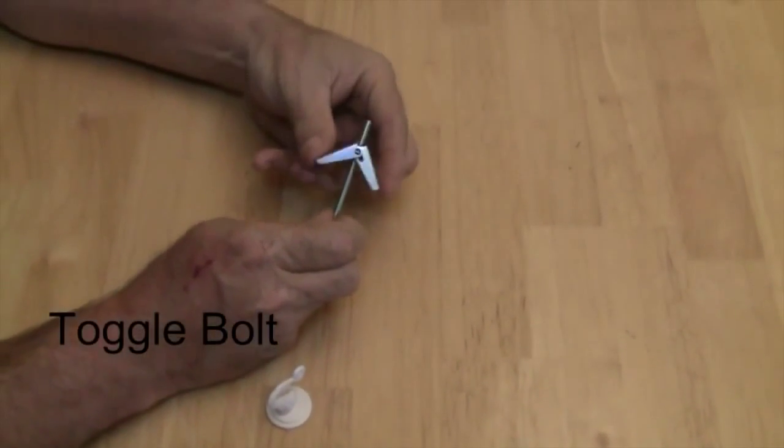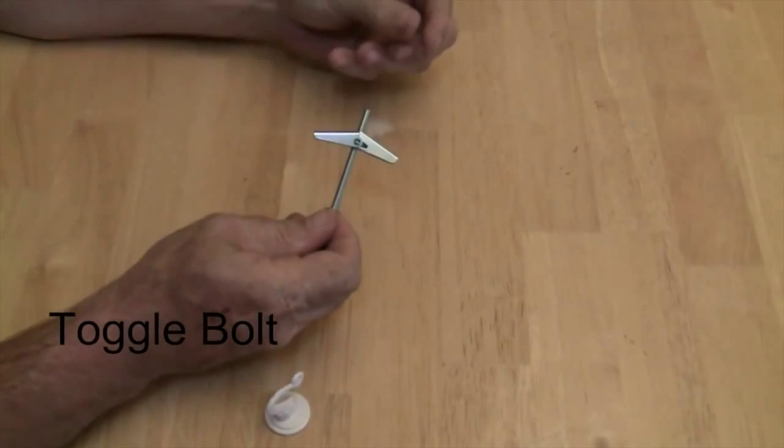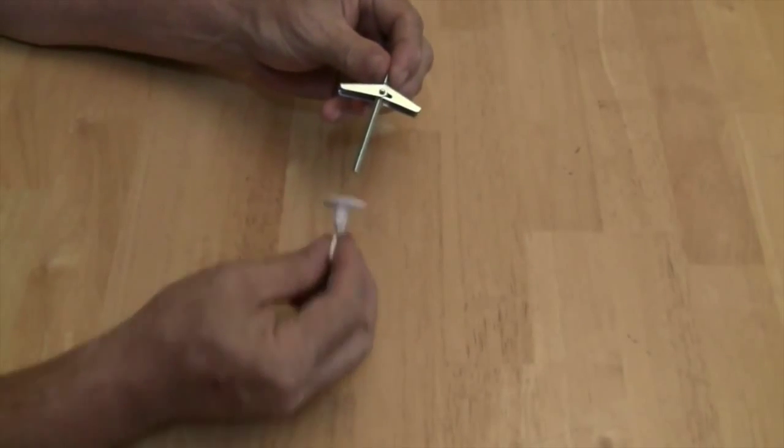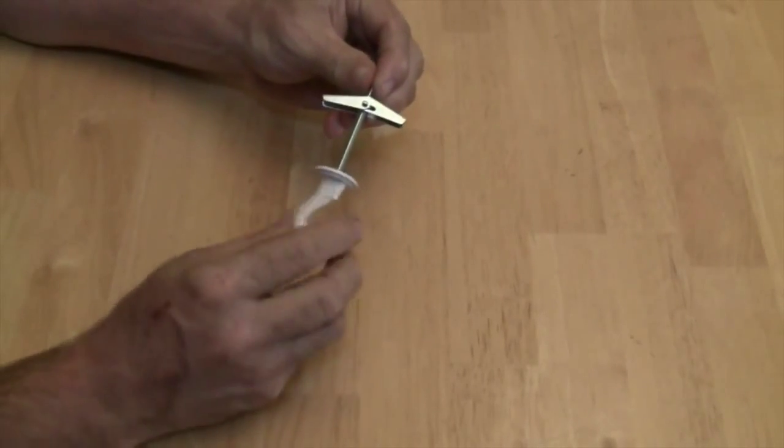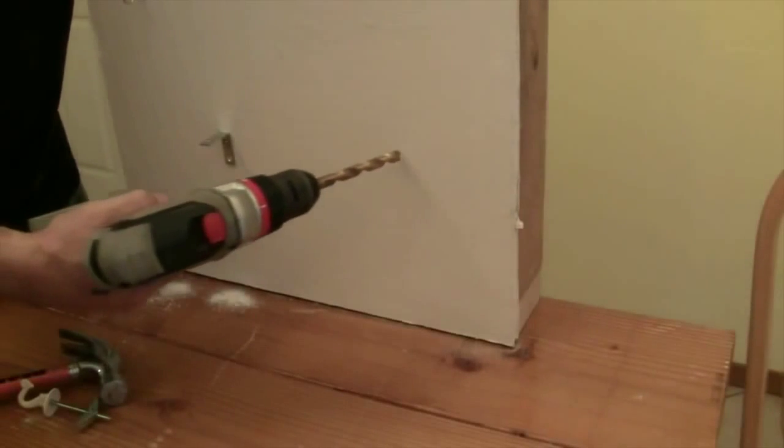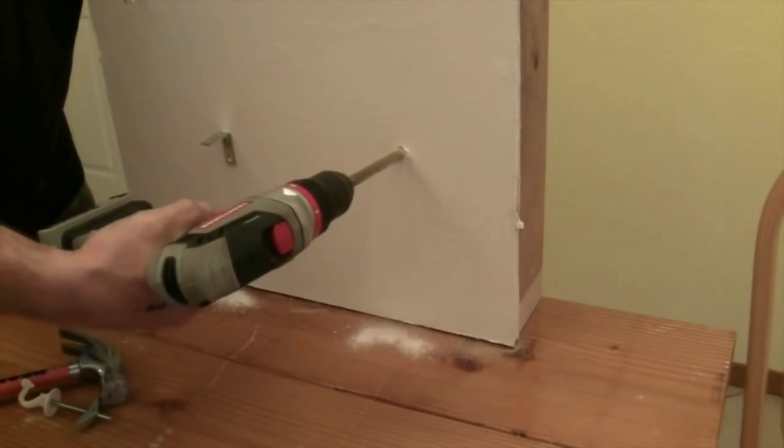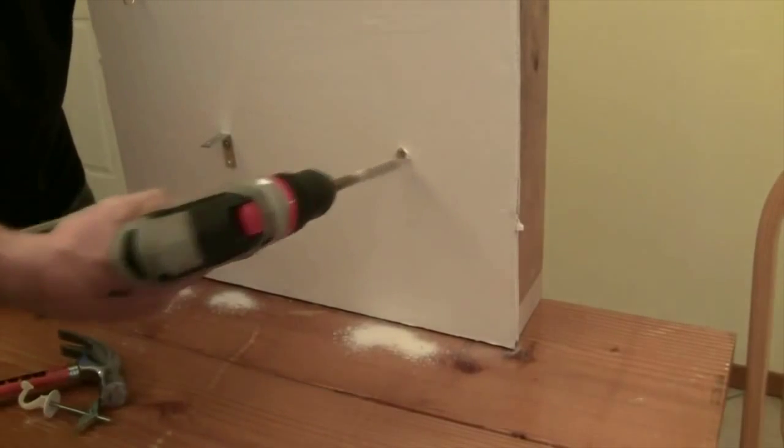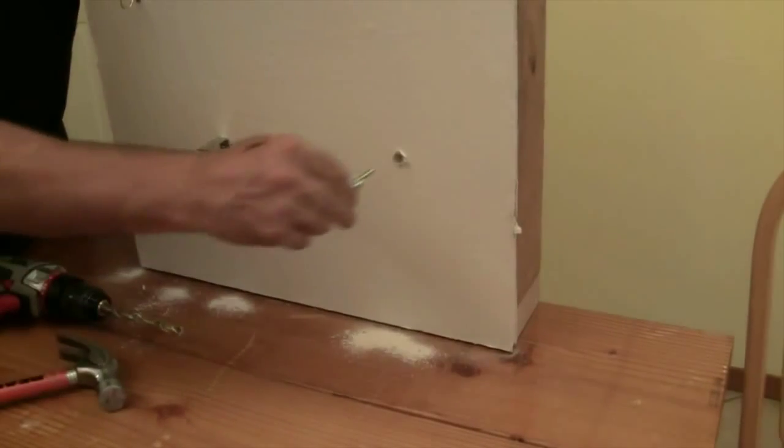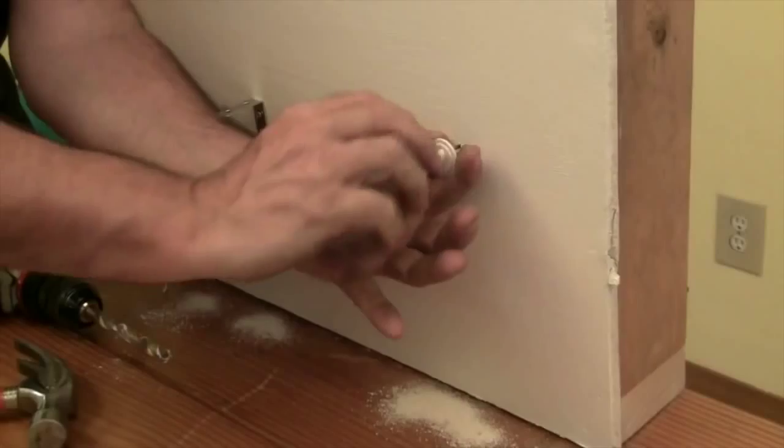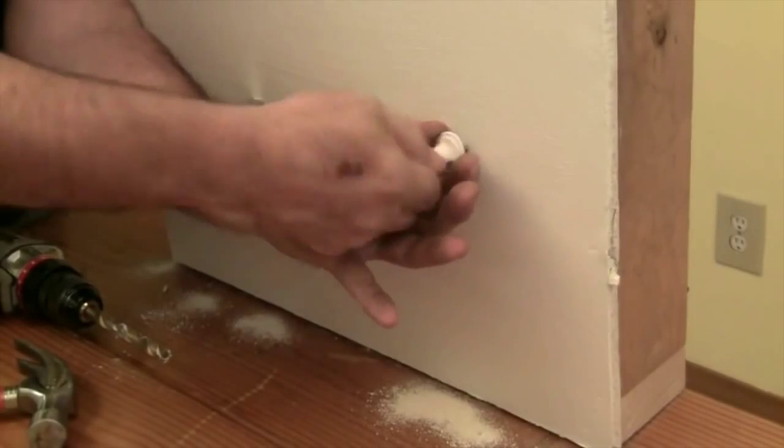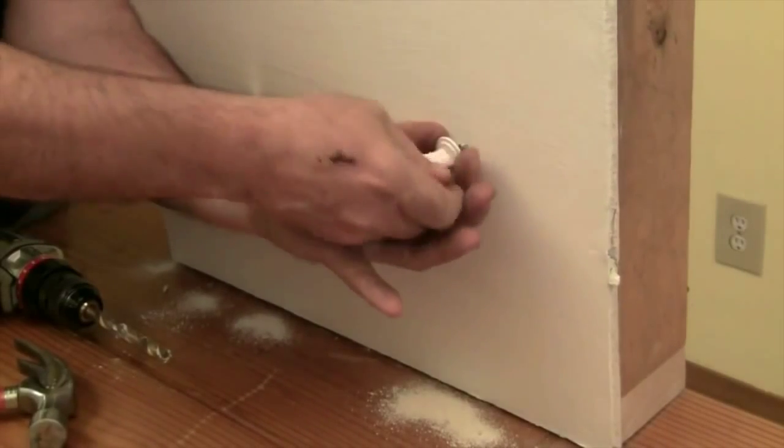The toggle bolt has spring loaded wings. These are the toggle and are affixed to the bolt or machine screw. The toggle springs open against the interior of the wall and acts as an anchor for the hanging hardware. Drill a hole just large enough for the folded toggle to pass through. Assemble any hanging hardware needed for the project onto the bolt. Push the toggle bolt through the hole and pull the bolt toward you. As you screw in the bolt, keep enough counter pressure on that bolt to prevent the toggle from spinning. The toggle needs to fit snugly and remain stationary against the interior side of the wall.